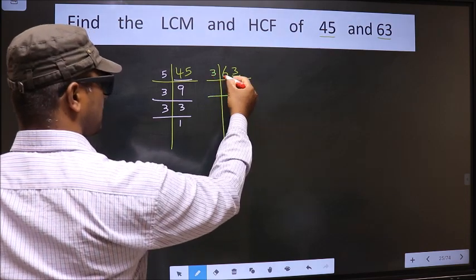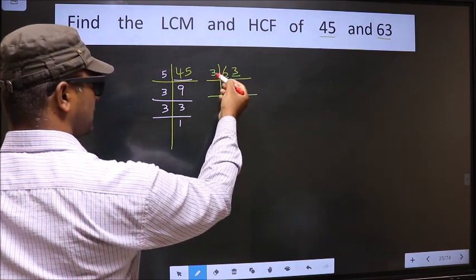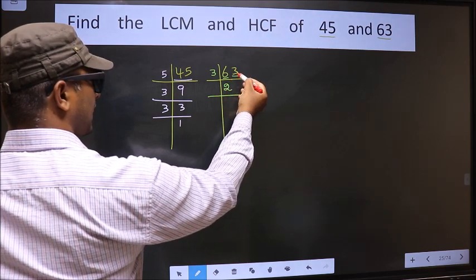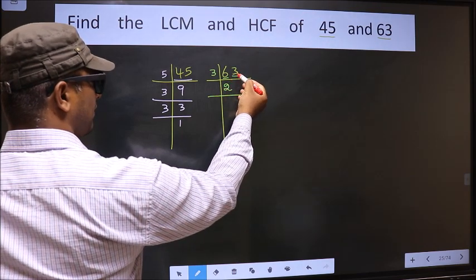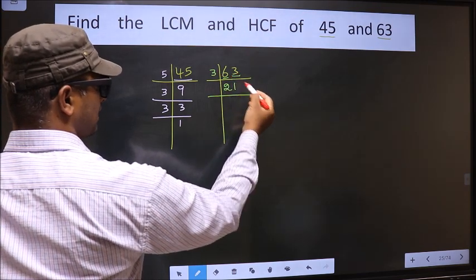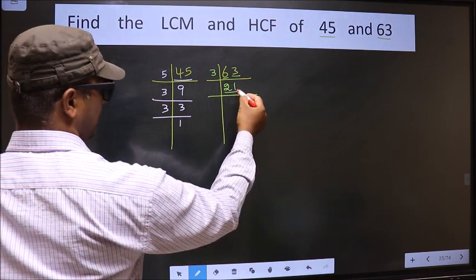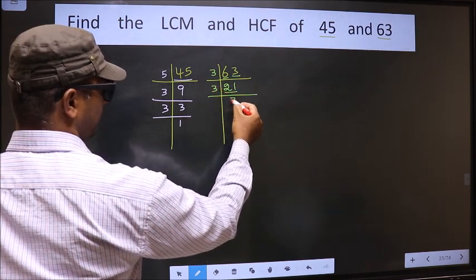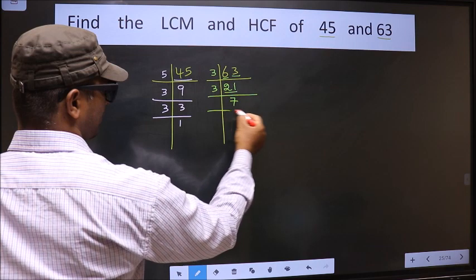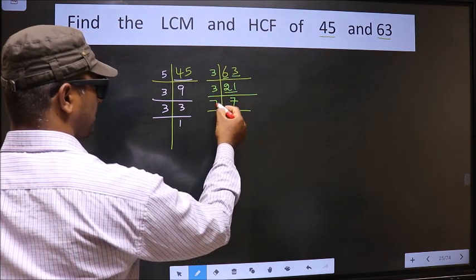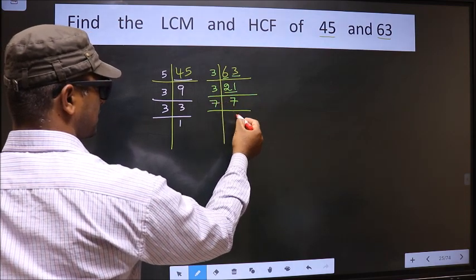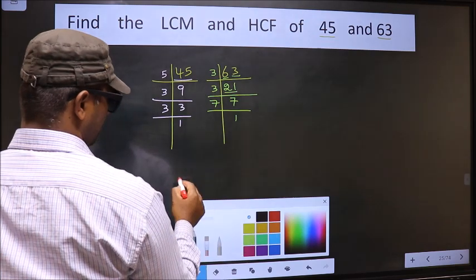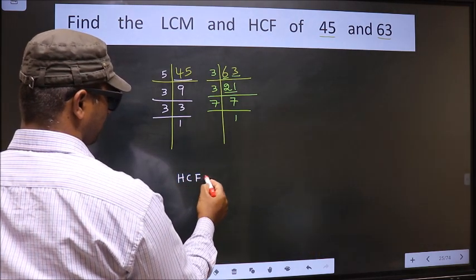The first number is 6 — when do we get 6 in the 3 times table? 3 times 2 is 6. The other number is 3 — when do we get 3 in the 3 times table? 3 times 1 is 3. Now here we have 21. 21 is 3 times 7. Now 7 is a prime number, so 7 times 1 is 7.